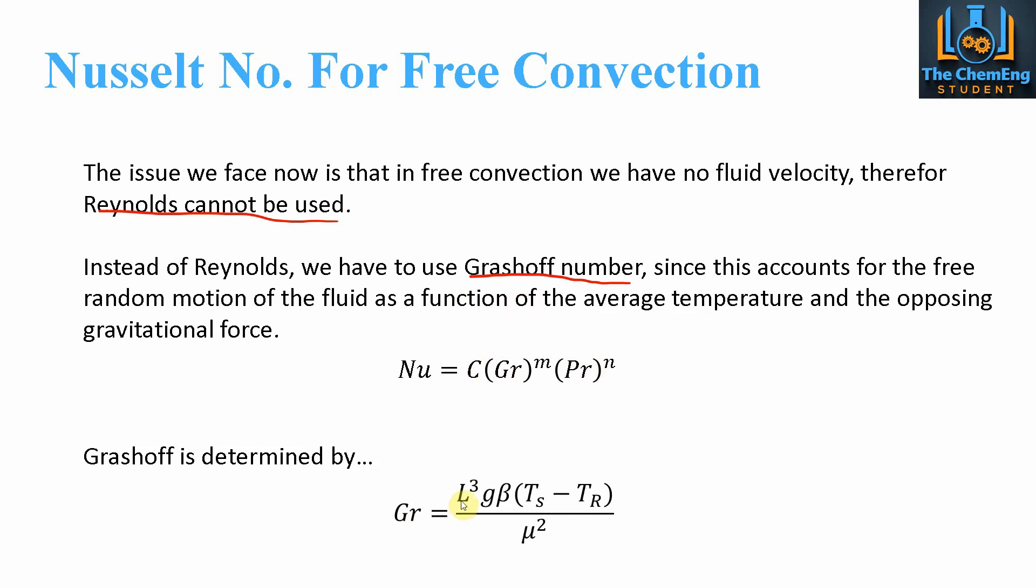Now Grashoff number is defined as the length to the power 3 multiplied by the gravitational force. Because remember, if we have free convection, here is our plate, then the air as it heats up, so heat comes out this way, then the hot air will begin to rise because the density becomes less as it heats up. But in this process, we always have gravity trying to pull the air back down the way. Hence why we need to account for the gravitational force. We then include this parameter beta and then the difference in the temperature between the surface and the surrounding fluid, all divided by the viscosity squared. The beta value is the reciprocal of the average temperature in Kelvin, so this would be 1 over the average temperature. Therefore we would multiply this by our numerator and divide by the mu squared on our denominator.